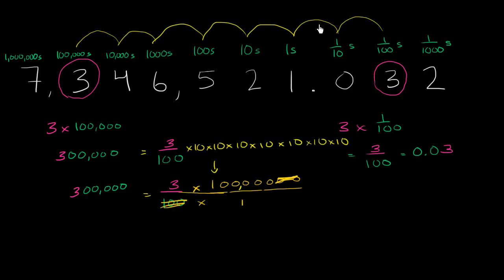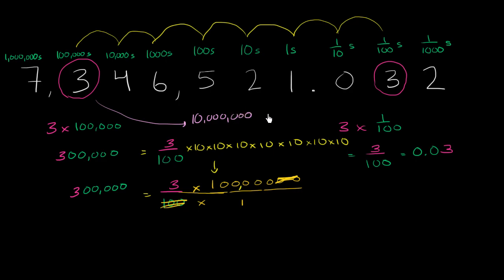Shifting the three seven decimal places makes that three worth 10 million more. So this three represents 10 million times the value of this other three.